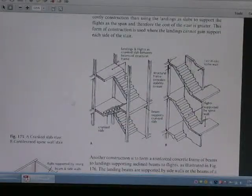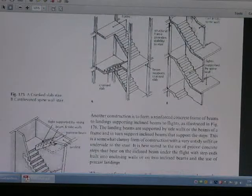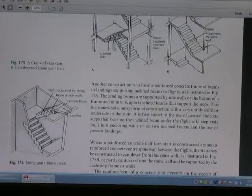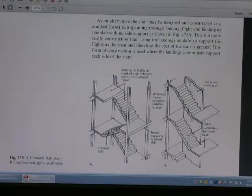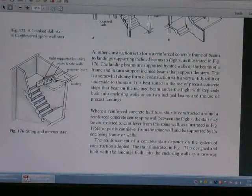This is a cranked slab stair, cantilevered spine wall stair. This is the kind of stair you can see on this diagram — this is a string and trimmer stair, this is a cranked slab stair and cantilevered spine stair, and this is a string and trimmer stair.